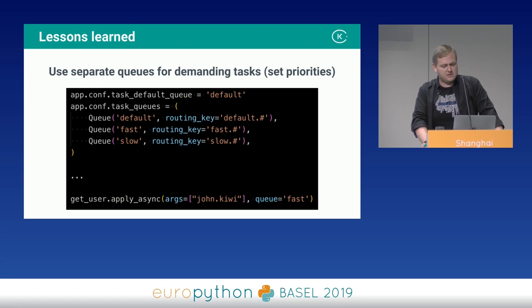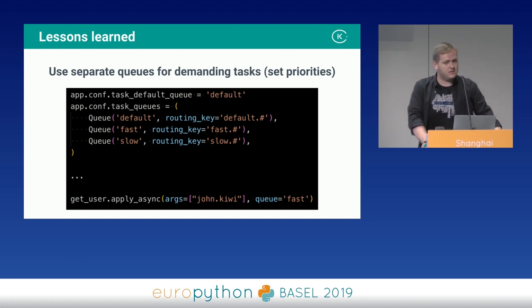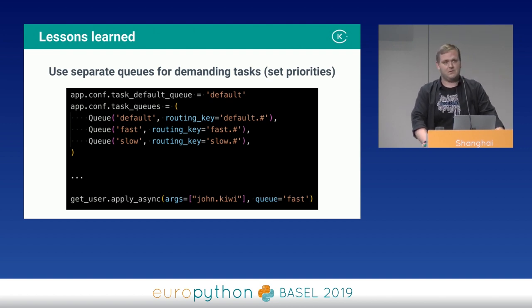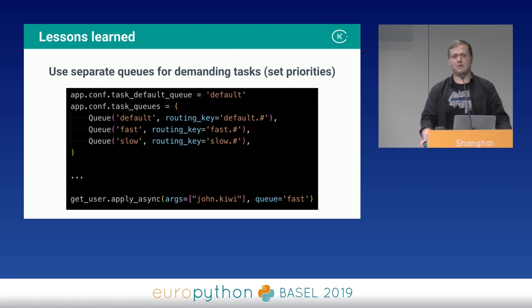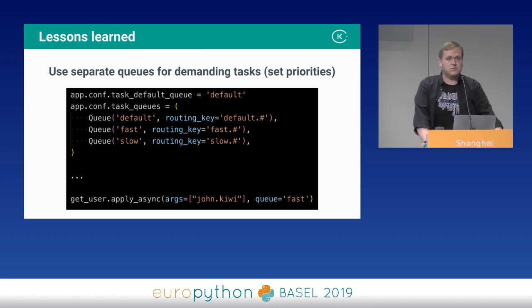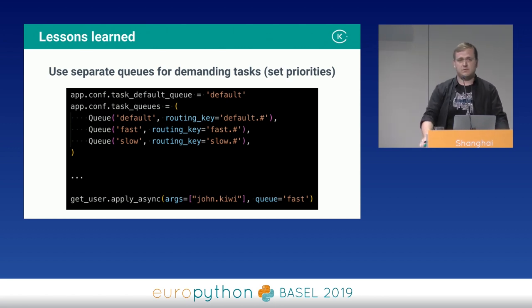Separate queues for demanding tasks. Imagine a task communicating with a very slow API — ten seconds per response — alongside a task using a super-fast API taking milliseconds. With a single queue, long-running tasks will starve out because short tasks come more frequently and are always preferred. It's always better to separate these into their own queues — for example, a fast queue and a slow queue. Name them precisely.